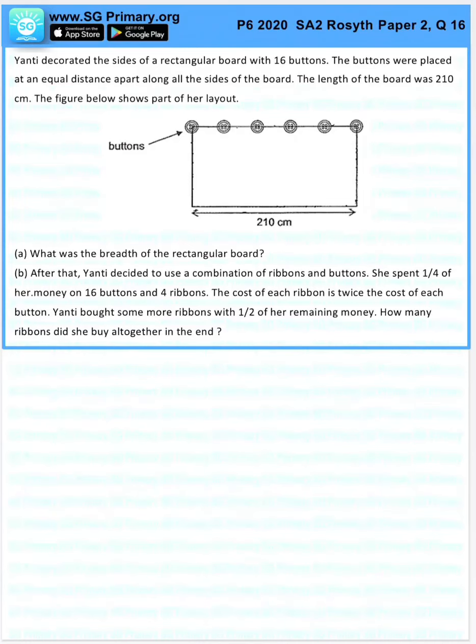Question 16. Yanti decorated the sides of a rectangular board with 16 buttons. The buttons were placed at an equal distance apart along all the sides of the board. The length of the board was 210cm. The figure below shows part of her layout. What was the breadth?